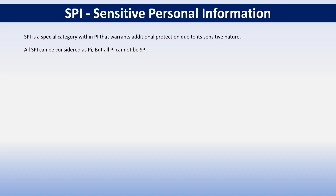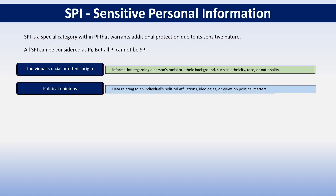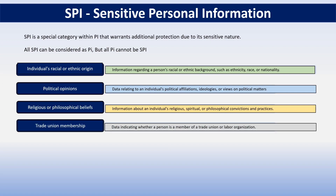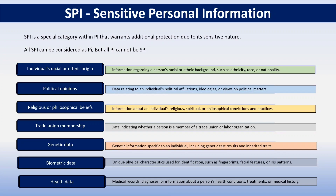So what is SPI? It includes the most sensitive information like individual race, ethnic origin, political opinion, religious or philosophical beliefs, trade union membership, genetic data, biometric data, and health data. These are sensitive types of information — some of them can identify an individual and some cannot. Let's try to understand the relationship between PI, PII, and SPI.